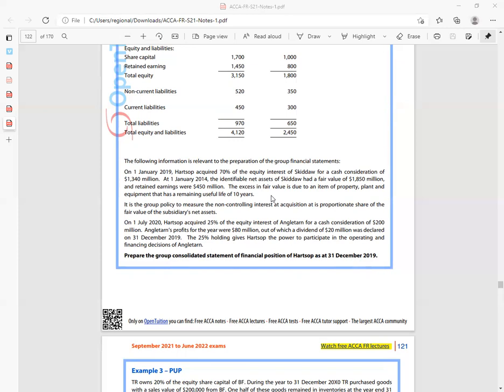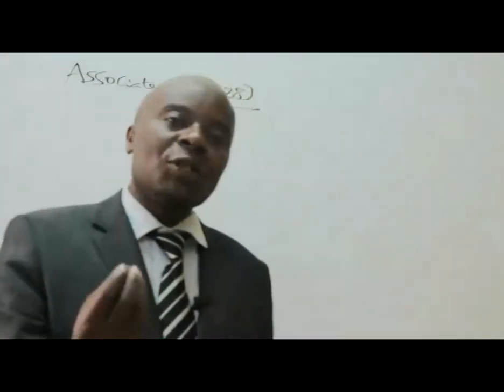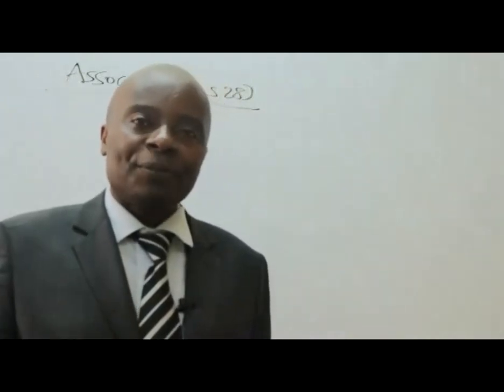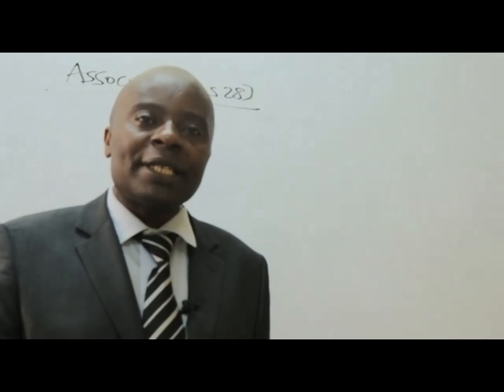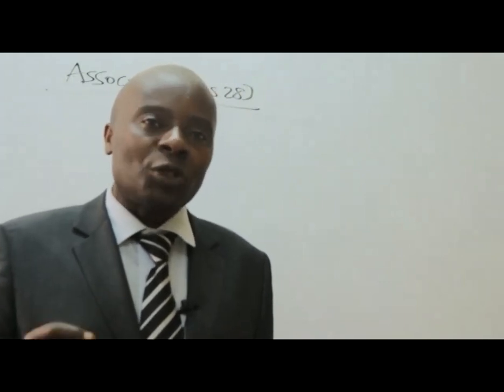On 1st July 2019, HATSOP acquired 25% of the equity interest of Angleton for a cash consideration of $200 million. Angleton's profit for the year was $80 million, out of which a dividend of $20 million was declared on 31st December 2019. The 25% holding gives HATSOP the power to participate in the operating and financing decisions of Angleton — that means significant influence, which means Angleton is an associate.